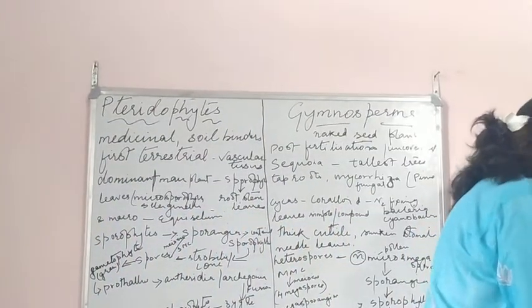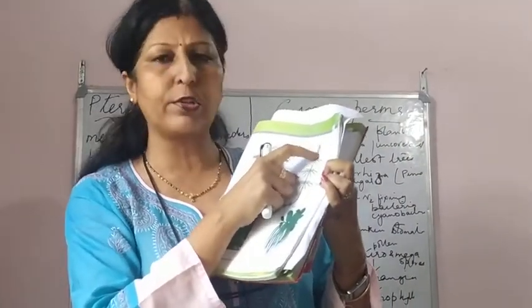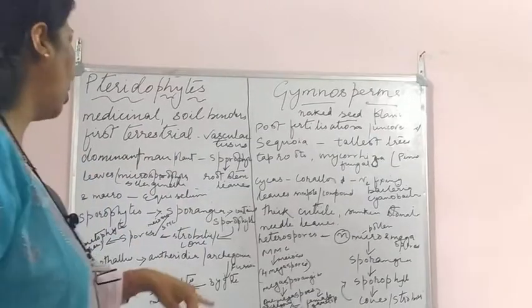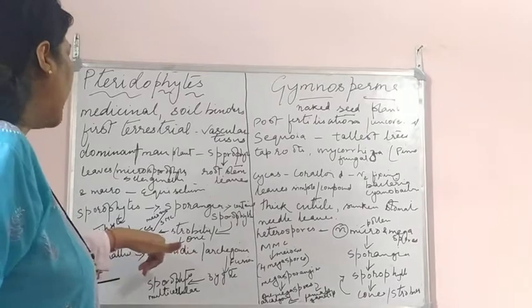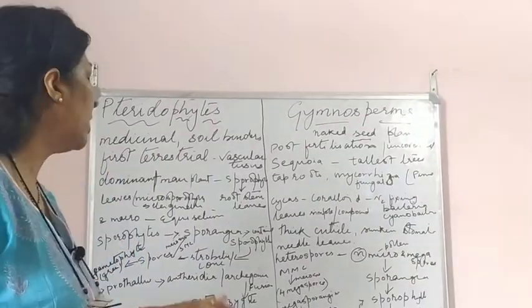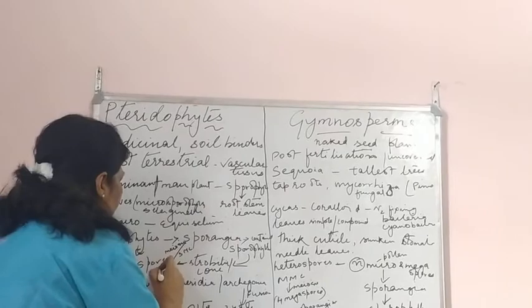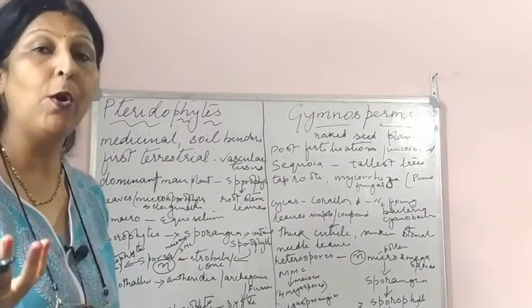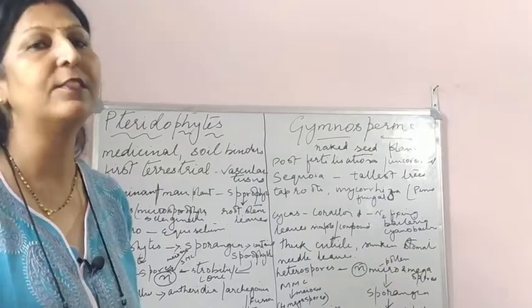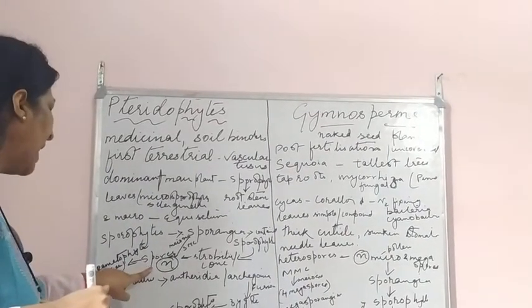The diagram in the book shows the cone or strobilus on top with sporophylls arranged on it. Sporangia bear spores, and the spores are formed by the process of meiotic division. The spore mother cells inside the sporangia undergo meiosis, giving rise to spores with n chromosome number.